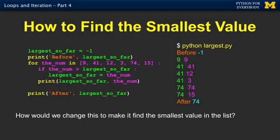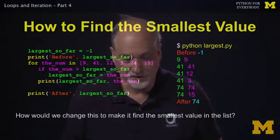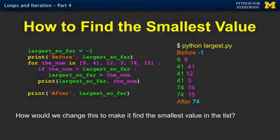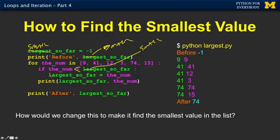The question is: what would we change to make it search for the smallest value in the list? If we just change the greater than sign to a less than sign, and change the word 'large' to 'small' — is that going to fix it? What number is going to come out? Is it going to be three? If I did this, is that going to make it better? It was a trick question.